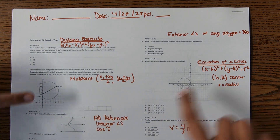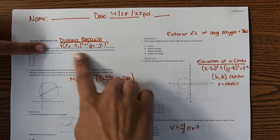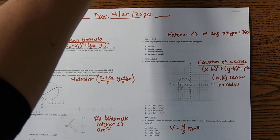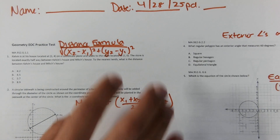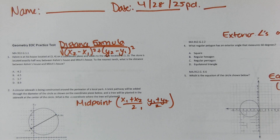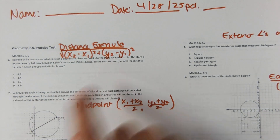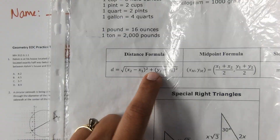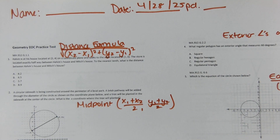We have a lot of equations written out — some of them are on the reference sheet, and I'll point out which ones as we go. The distance formula is on the reference sheet, so it's not something you have to memorize. You can just copy that down when you need to find distance between two points.